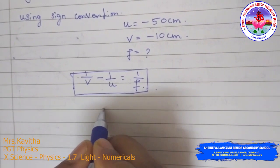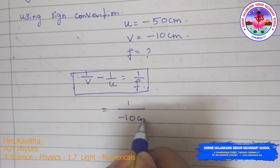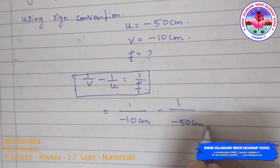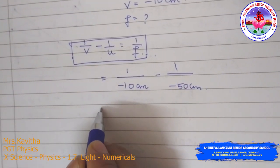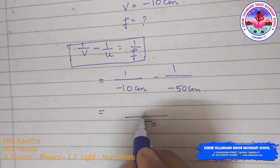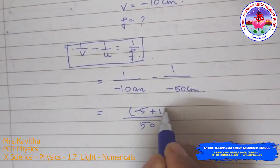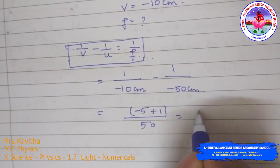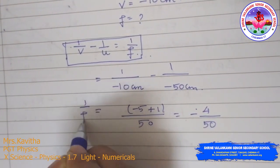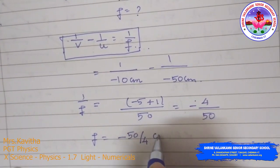Now we can apply the values: 1/F = 1/V − 1/U = 1/(−10) − 1/(−50). Taking LCM as 50: that gives (−5 + 1)/50 = −4/50. So 1/F = −4/50, therefore F = −50/4 cm.